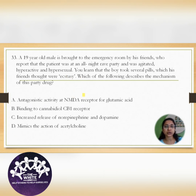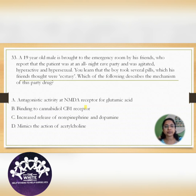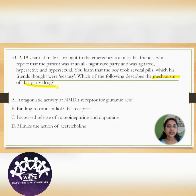Read the last one or two lines of the question and then read the options, so that you will get some clue about the question. Your brain will start to pick the important keywords. In this question, it asks: which of the following describes the mechanism of this party drug?